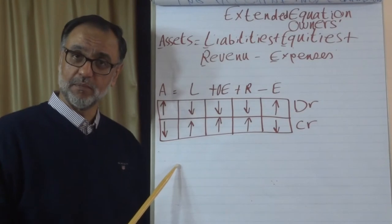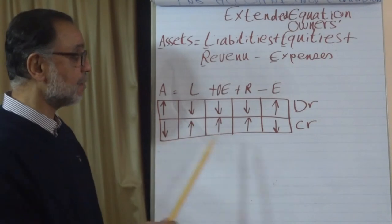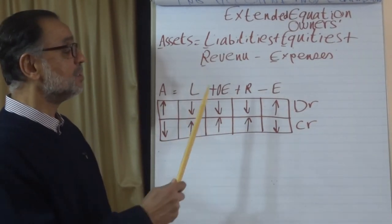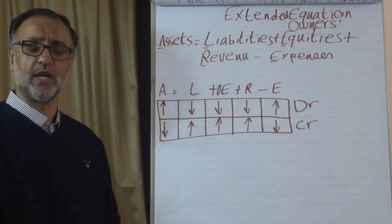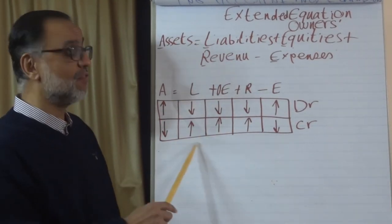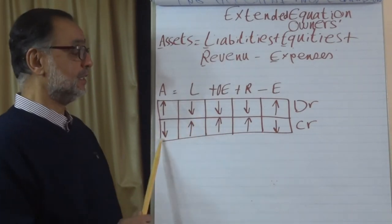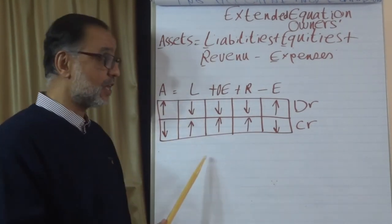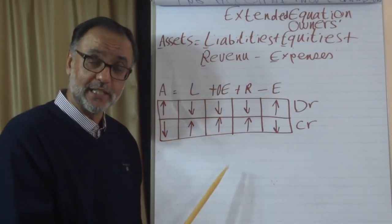A memorable way to remember this is the sandwich analogy from a teacher: assets and expenses are like the bread of a sandwich — they are debit, so an increase is debit and a decrease is credit. Liabilities, owner's equity, and revenues are like the filling inside the sandwich — they are credit, so an increase is credit and a decrease is debit.